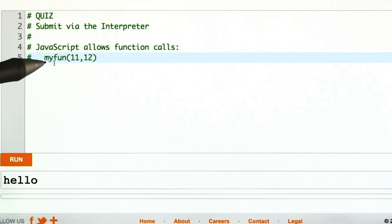A lot like Python, JavaScript allows function calls. You write out the name of your function, and then you just pass in some number of arguments, possibly none.